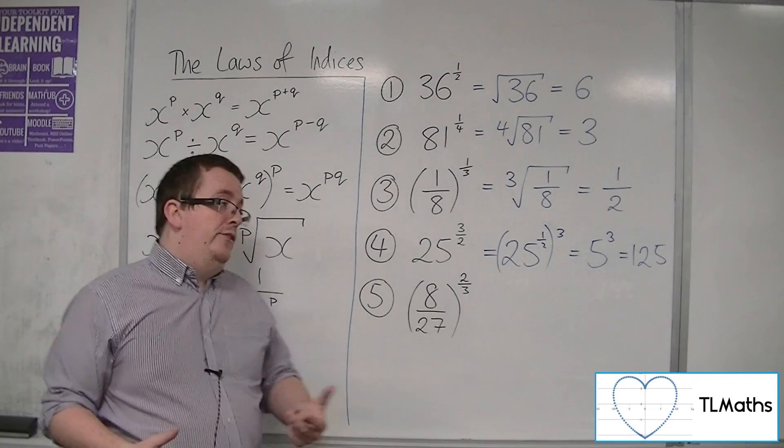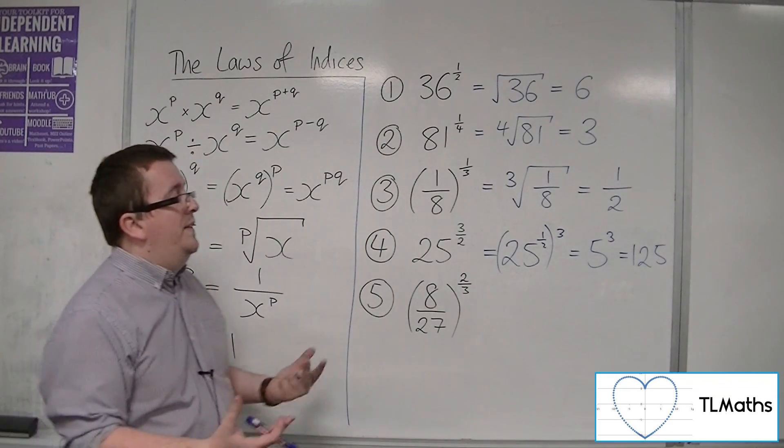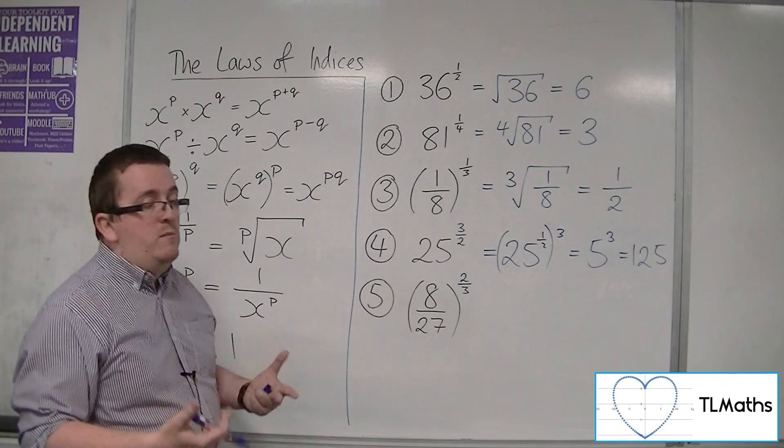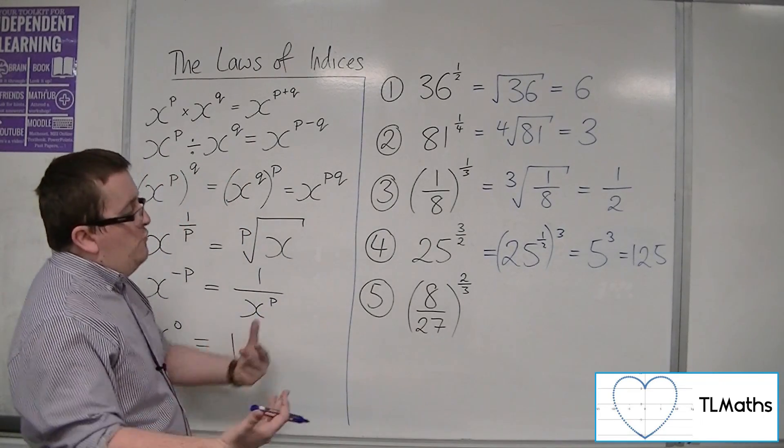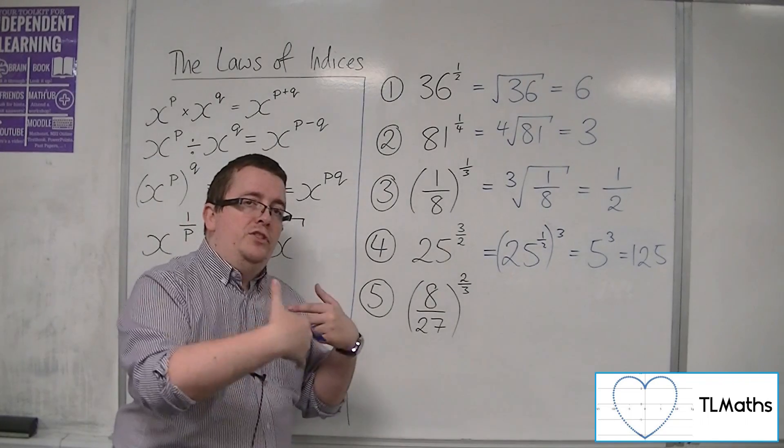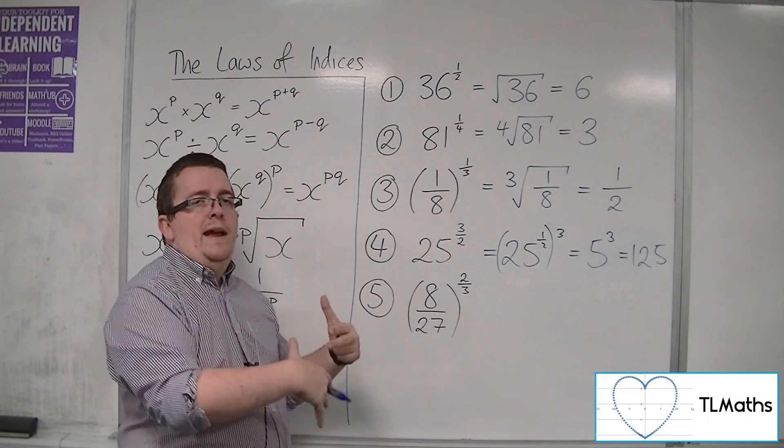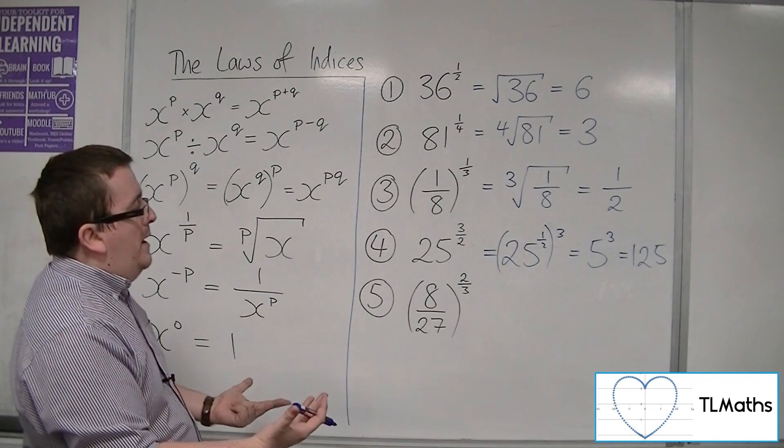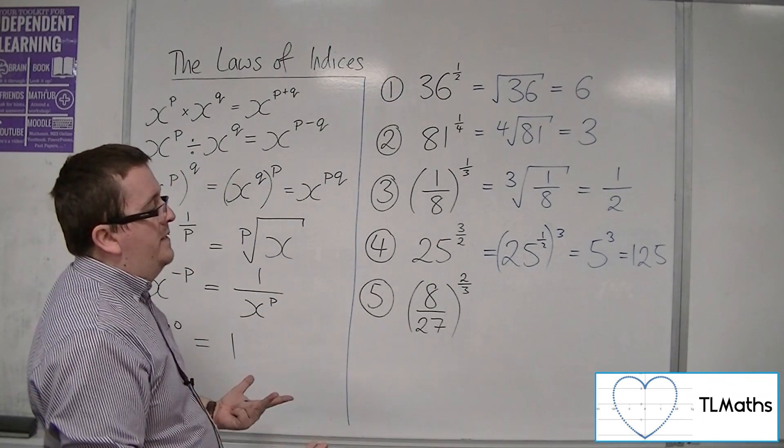So from before, I would have had to have known that the square root of that number was 125, which would have been more challenging. So really, you want to do that root first before you go ahead and cube, or to the power of 4, to the power of 5, or something like that.